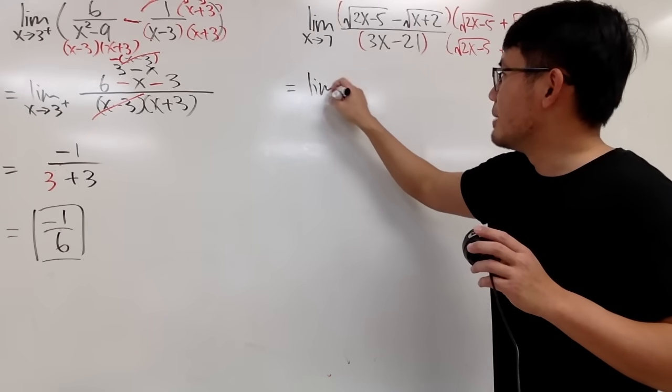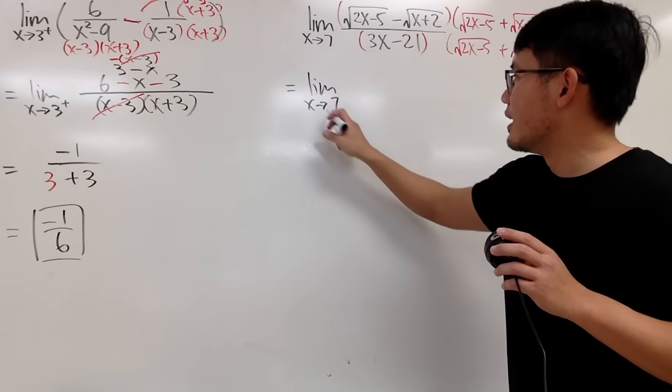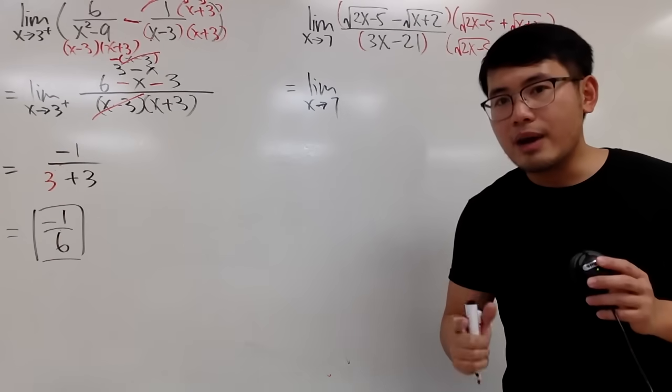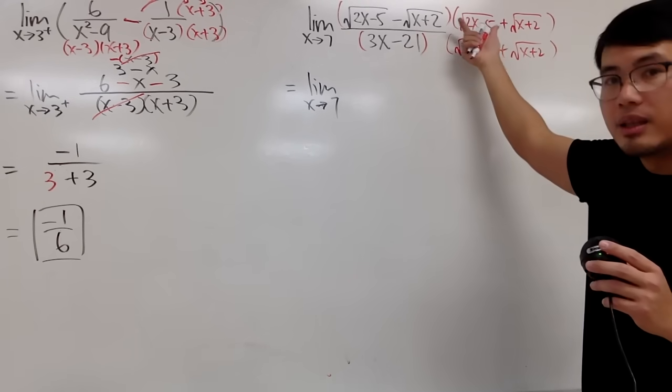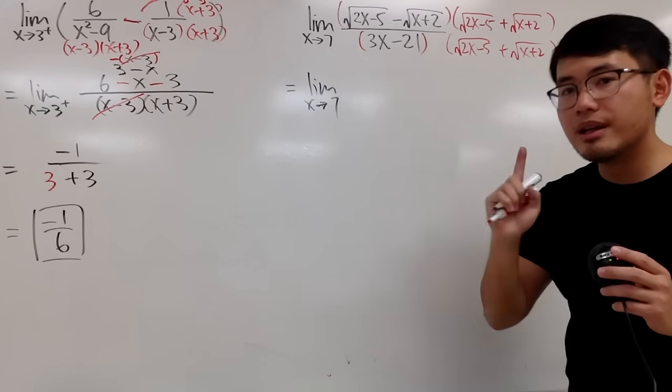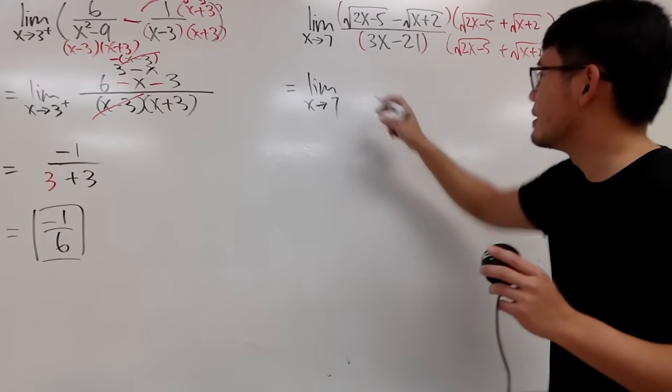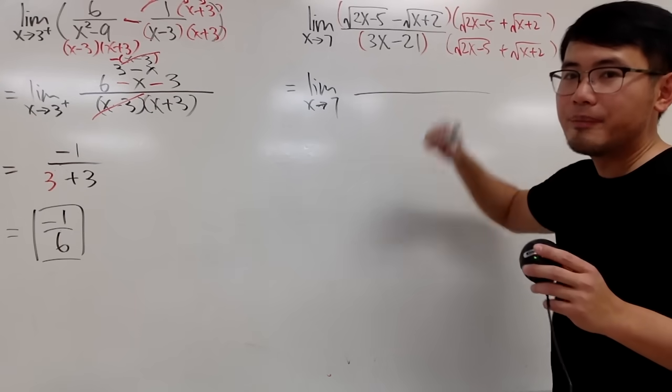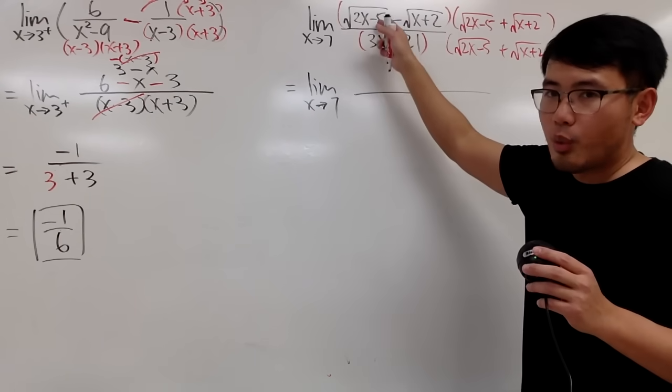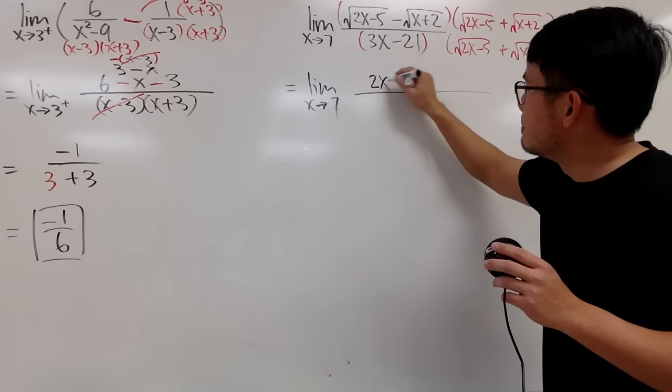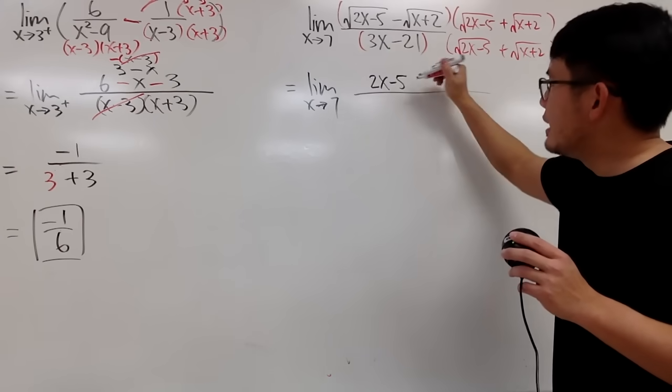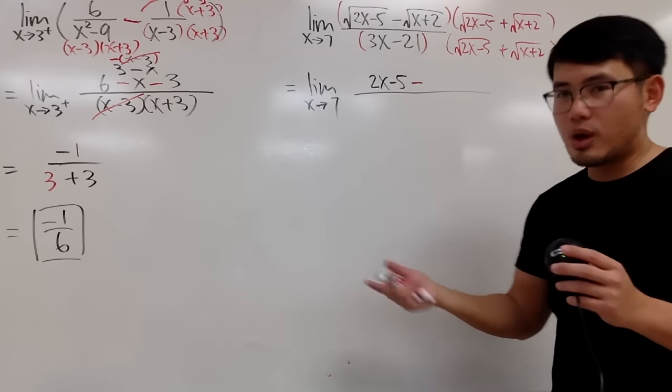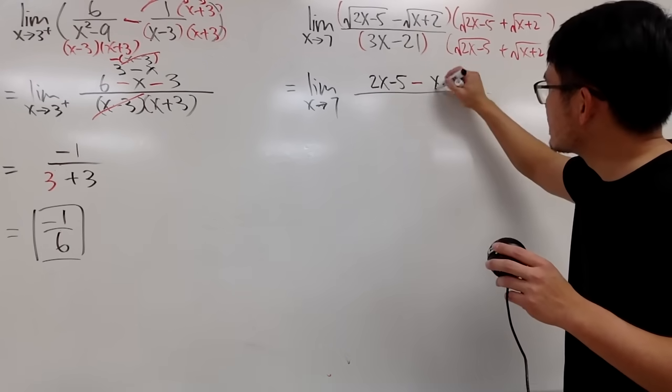Once again, be sure you write down the limit as x approaching 7. And then from here, on the top. You see, that's why we multiply by the conjugate. It's because we want to fix the top. Therefore, just multiply out the top. And when you do that, when you multiply the conjugates together, you just get the first term squared. So you first have 2x minus 5. And then you are going to minus the second term squared. When you square the square root, once again, you just cancel. You have x plus 2.